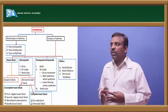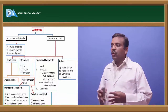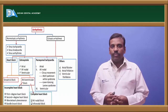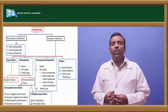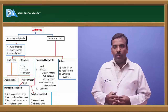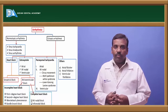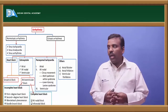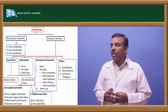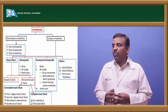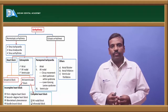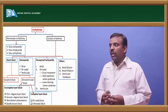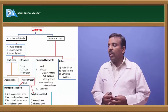Heart block is of two types: sinoatrial block and atrioventricular block. Atrioventricular block is further divided into incomplete heart block and complete heart block. Incomplete heart block includes first degree, second degree, Wenckebach's phenomenon, and bundle branch block. Complete heart block includes AV nodal block and infranodal block.